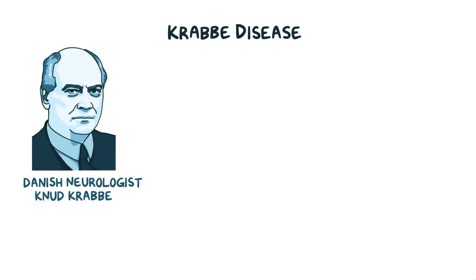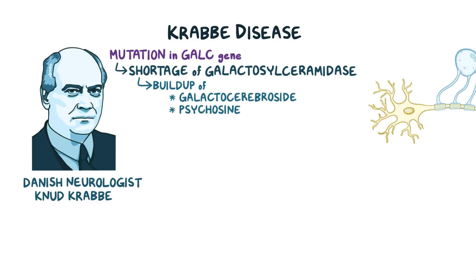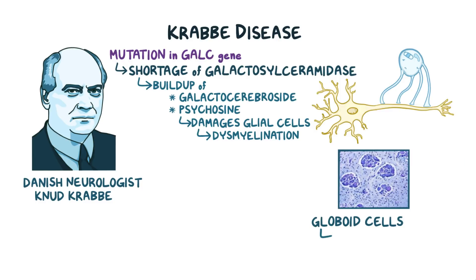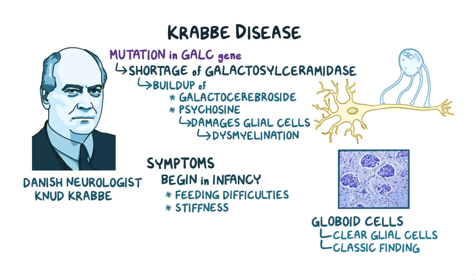Let's go through three of the most common ones. First off, there's Krabbe disease, named after the Danish neurologist Knud Krabbe, and it originates from a mutation in the GALC gene, which results in a shortage of galactocylceramidase. That leads to a buildup of galactocerebroside and psychosine, which damages the glial cells in the central and peripheral nervous system. Over time, dysmyelination happens as the glial cells are no longer able to produce myelin. Special macrophages called globoid cells move in to clear out the damaged glial cells, and these globoid cells are a classic finding in Krabbe disease. Typically, symptoms start in infancy and can lead to feeding difficulties, stiffness, seizures, muscle weakness, deafness, and blindness.